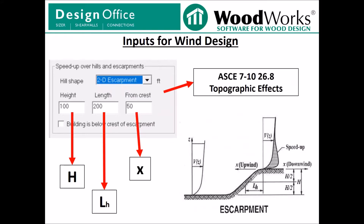There is an option for taking into account topographic effects due to hills and escarpments. The figure on the right comes from ASCE 7-10. The height input corresponds to H in the figure, the length input corresponds to LH in the figure, and the 'from the crest' input is the distance X from the escarpment or hill.